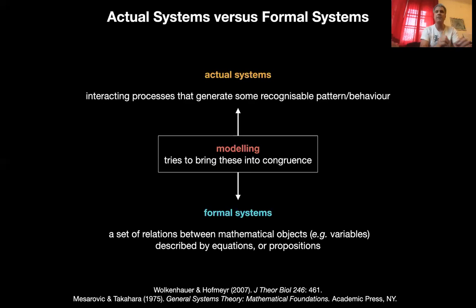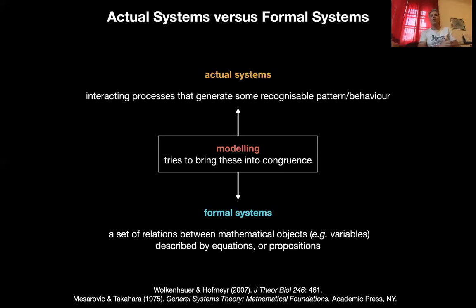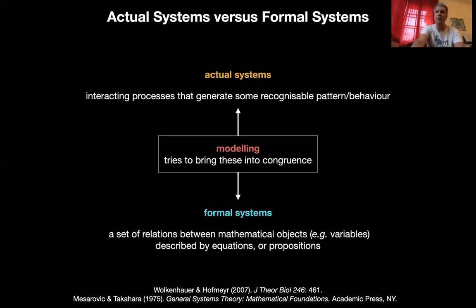This is difficult to do, and this is a perennial problem in the philosophy of science: how can you judge whether the model you've constructed — the formal system — is a good match for the actual system out there? Because you cannot access that real world directly, so we need to think really hard about how this is supposed to work.